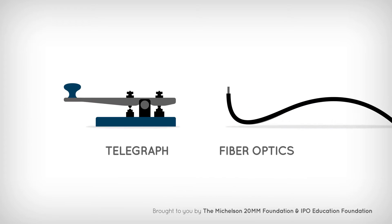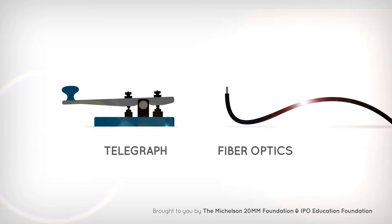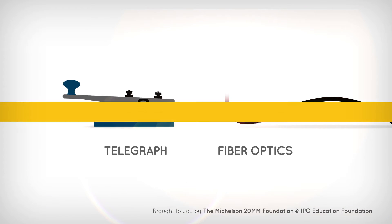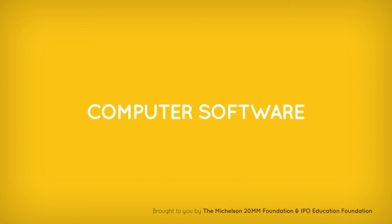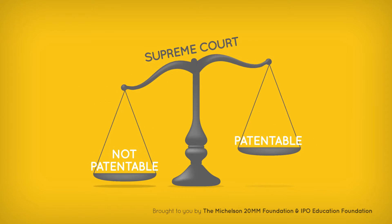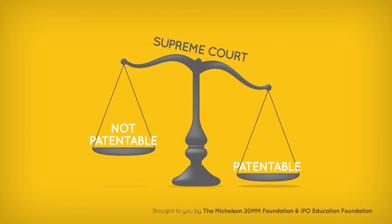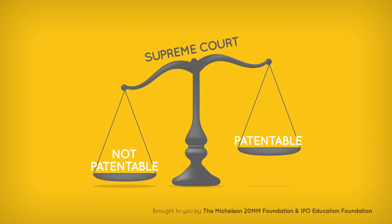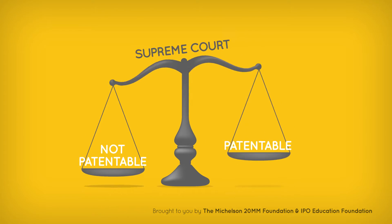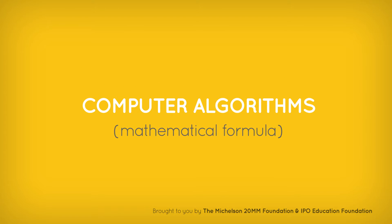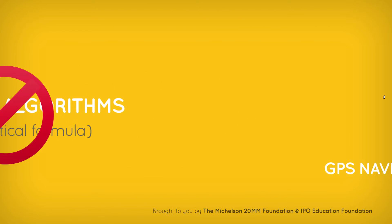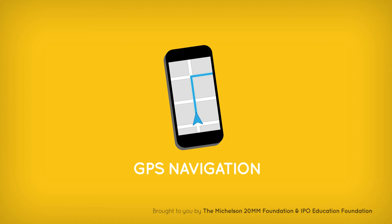But guess what? You can patent a device that uses electromagnetism or light waves to communicate. Things get a little blurry though when it comes to computer software. The Supreme Court has wrestled with this issue for more than 40 years and still hasn't resolved exactly when software is patentable. Computer algorithms alone can't be patented because they are mathematical formulas.